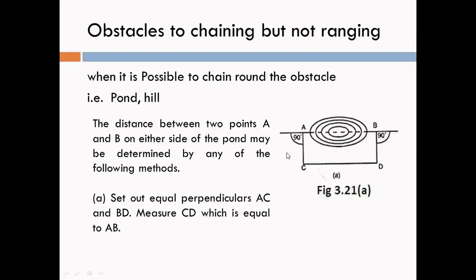In this case, this method is used for chaining. From points A and B, draw perpendicular lines AC and BD. Select points C and D on the ground. Join C to D and measure the length of line CD. The length of line AB is equal to the length of line CD. So CD = AB.